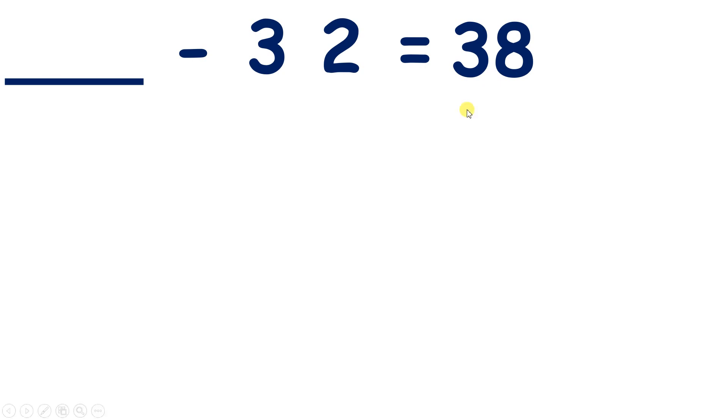Now we have something minus 32 equals 38. So what will our number family triangle look like? Well, with subtraction, the number we start on is the larger number. So we don't know what our larger number is, but we have 32 and 38 on the bottom. So how can we find the number at the top?